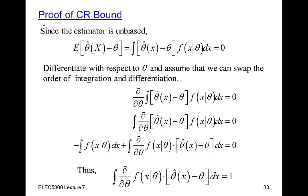To prove this, we start with something we know is true and then manipulate it. Since the estimator is unbiased, the expected value of the estimator theta-hat must equal the actual value of the parameter, little theta. So the expected value of theta-hat minus theta equals zero. Substituting the definition of expected value, we integrate over all possible values of x. Remember, theta is just some fixed parameter we're trying to estimate. Now we differentiate this expression with respect to theta.